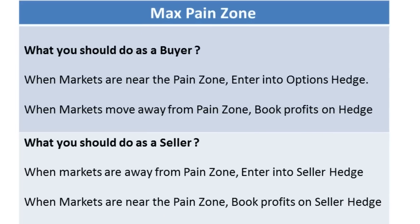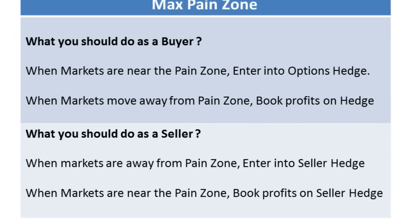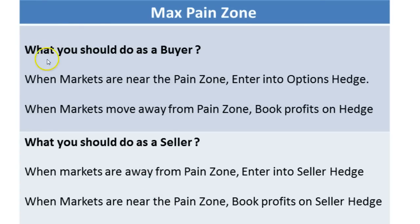As a buyer, when markets are near the pain zone, enter into an options hedge by buying both the call option and the put option out of the money on both sides. When markets move away from the pain zone by 200 or 300 points and you are in profits on the hedge, that's the best time to book profits — or at least set stop losses to ensure you don't lose your profitable position.